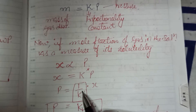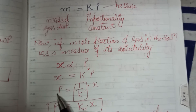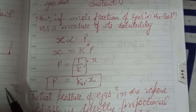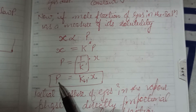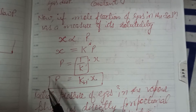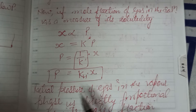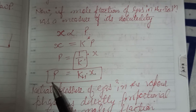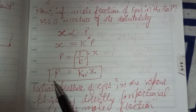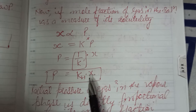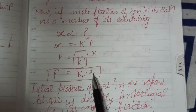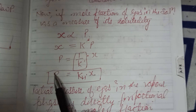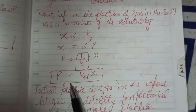If the Henry constant is large, then the pressure is less. The partial pressure of any gas in the vapor phase is directly proportional to the mole fraction, because p = kH·x. So this is the basic formula we use in Henry's Law.